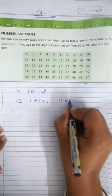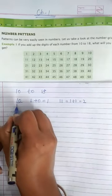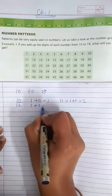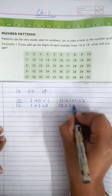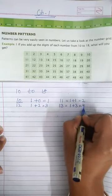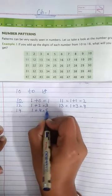1 plus 1, 2. 12, 1 plus 2 is equal to 3. 13, 1 plus 3 is equal to 4. 14, 1 plus 4 is equal to 5.